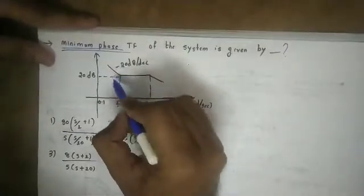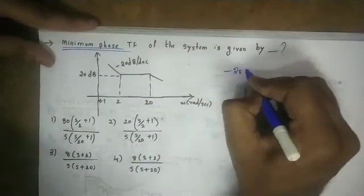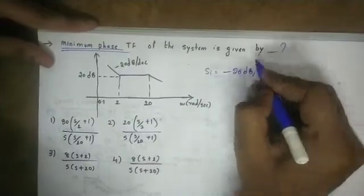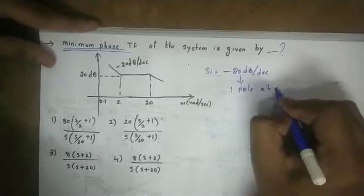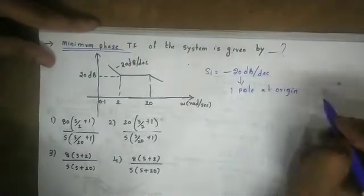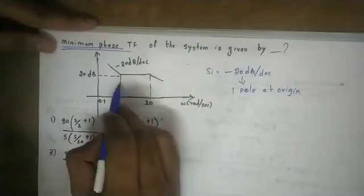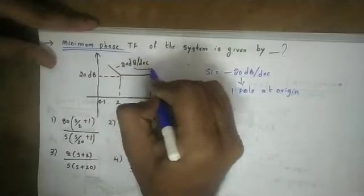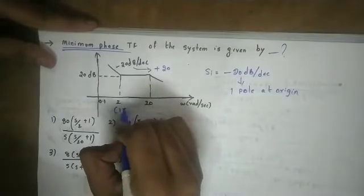Looking at the magnitude plot and the transfer function: there is an initial slope. The initial slope is equal to minus 20 dB per decade. This means there is 1 pole at the origin. Now minus 20 dB per decade goes to 0 dB per decade, so plus 20 dB per decade is added, meaning there is a zero. Then it goes back to minus 20 dB per decade, meaning another pole is added.